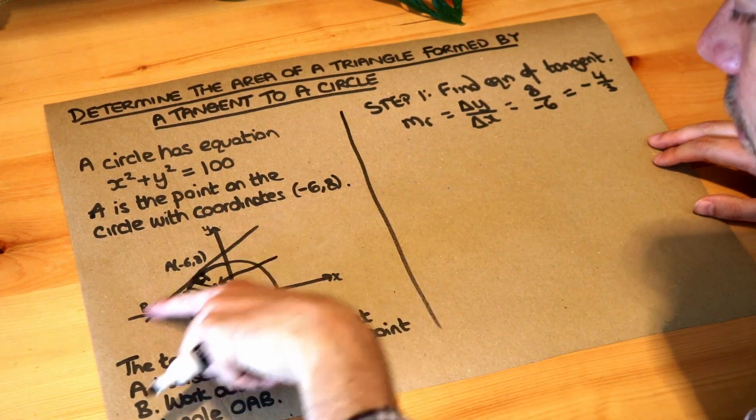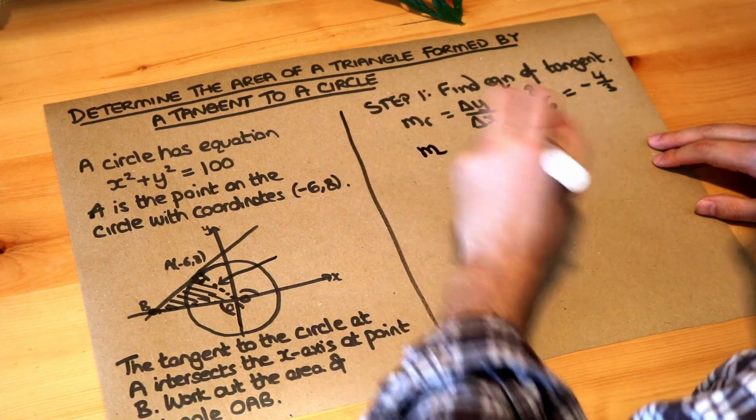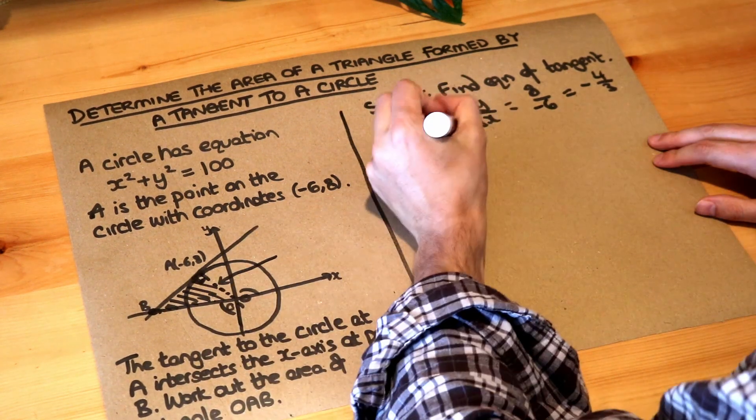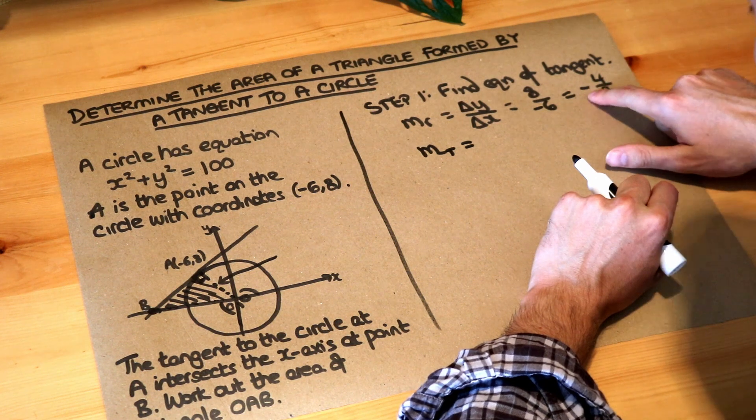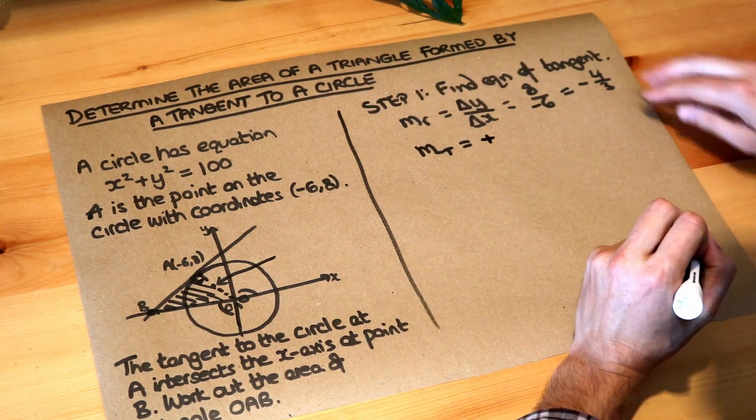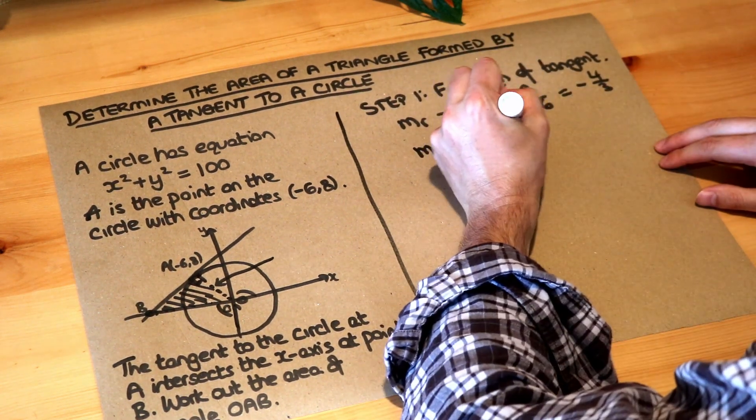And then the gradient of this tangent is the negative reciprocal, because it's perpendicular to that. So if I negate this, it becomes positive, and the reciprocal of this fraction, we just flip it upside down, is three-quarters.